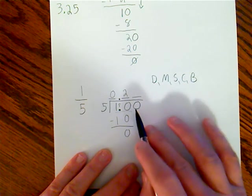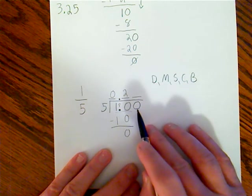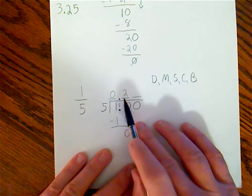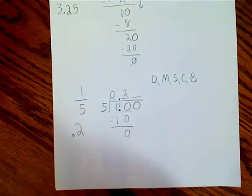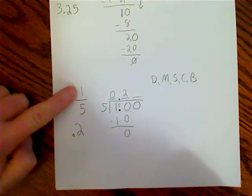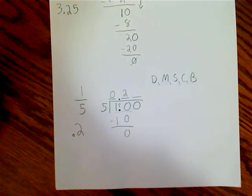Once I get to this point where I have a remainder of zero and there's nothing left to bring down other than those zeros, I am done. There's my answer right there: two tenths, or point two, is my final answer for 1 over 5. And that's that.